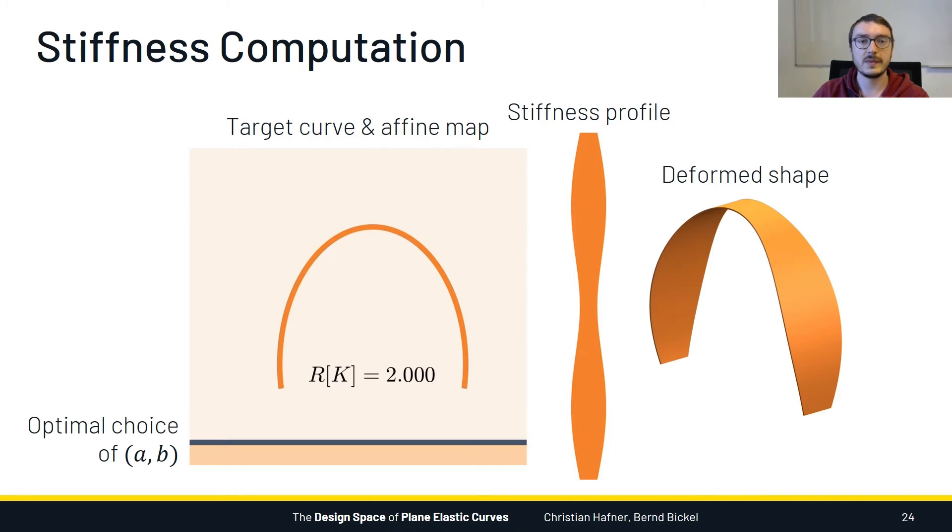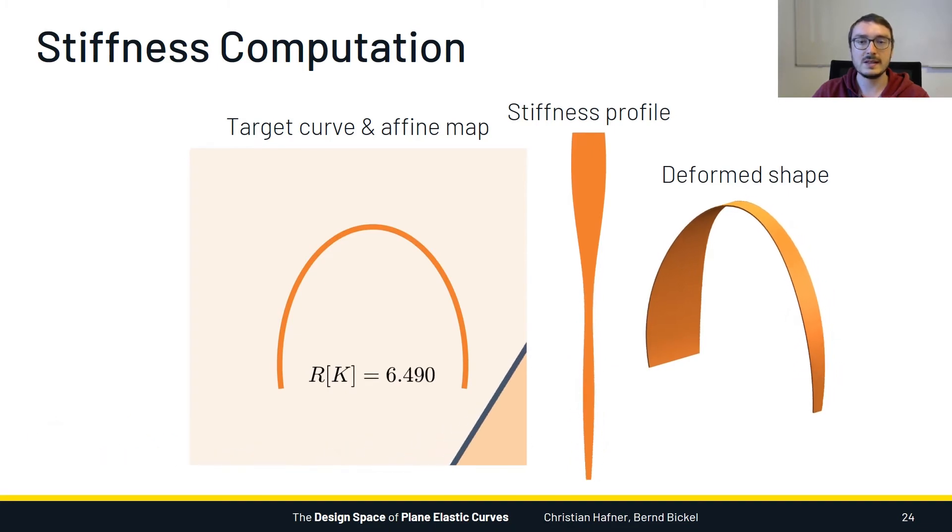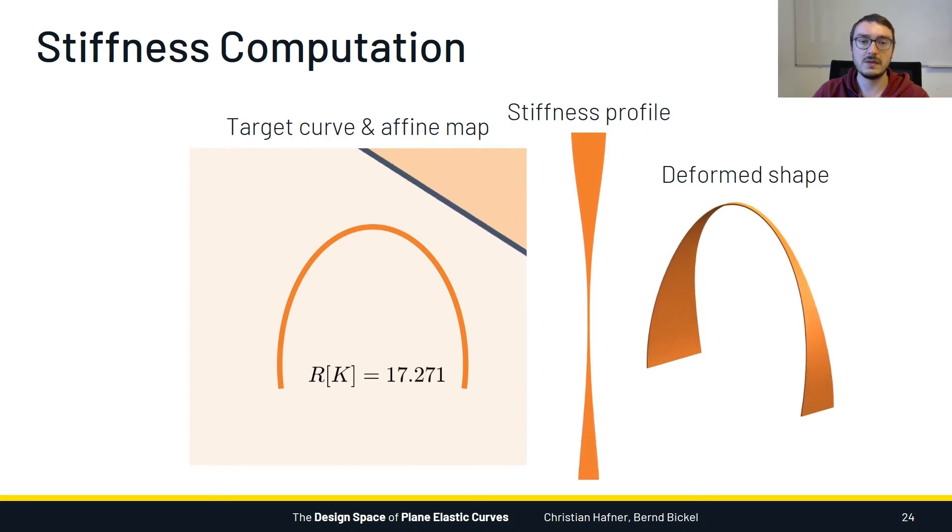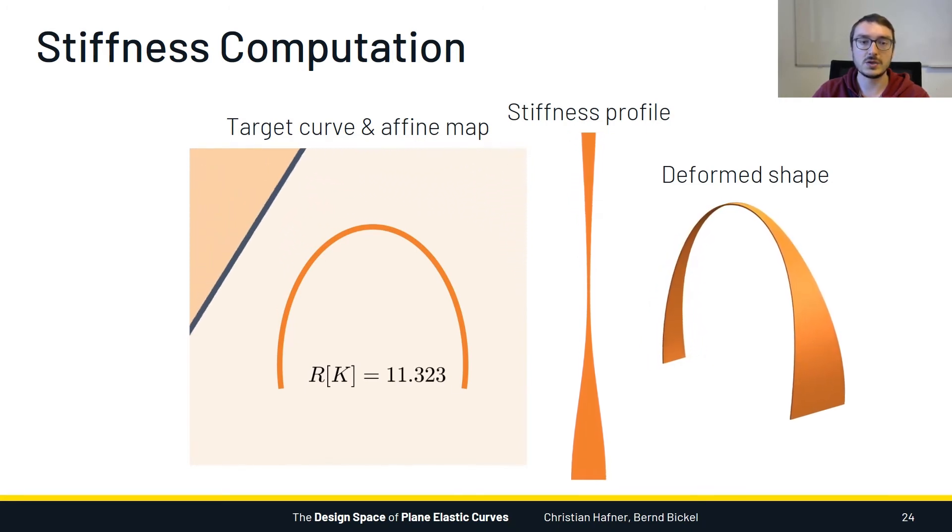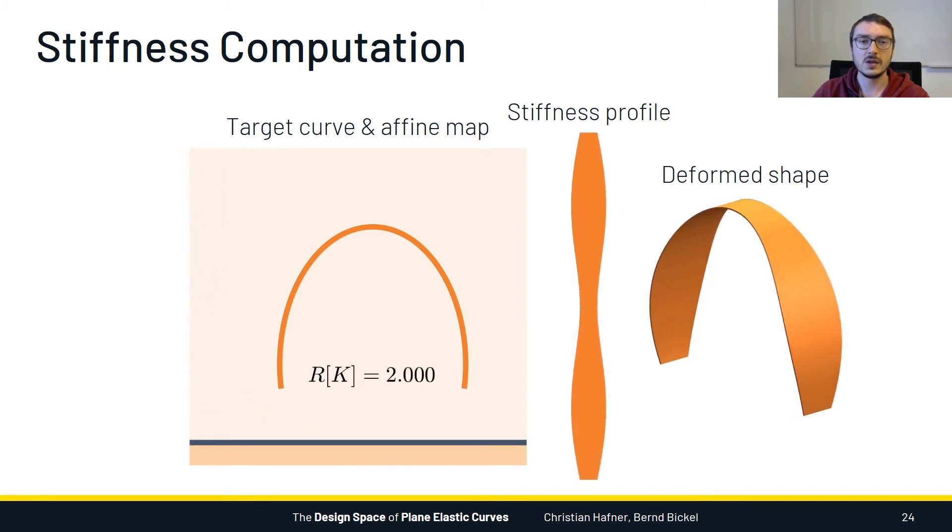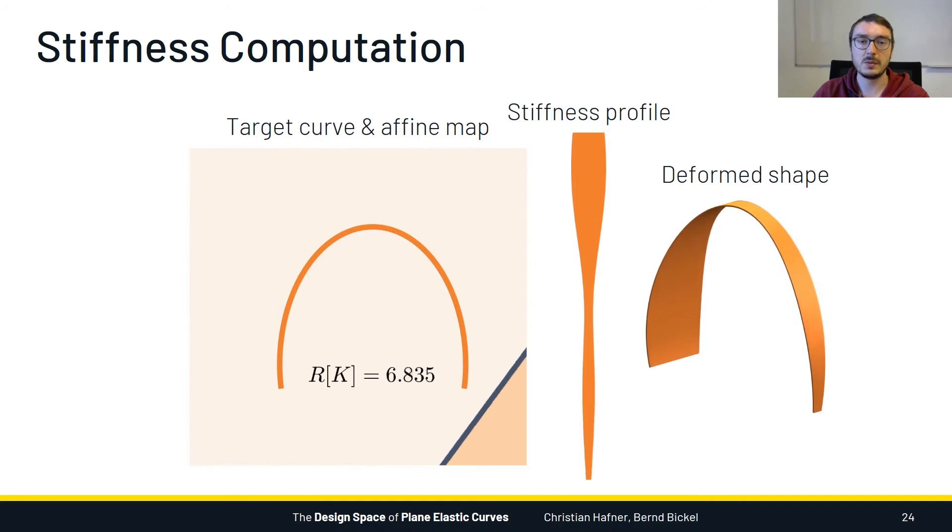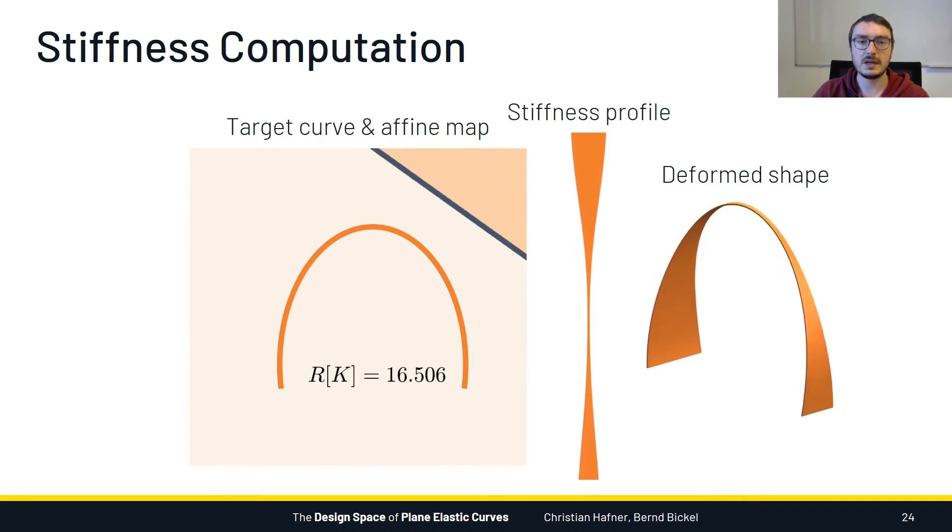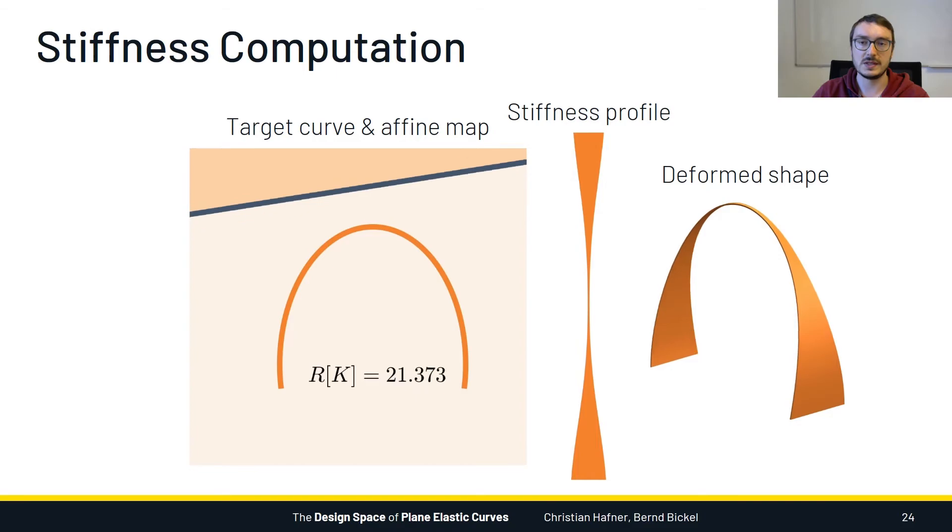Next let's look at what would happen if we didn't choose A and B optimally, but in some other way. Here we have an elliptical arc as the target curve, and the optimal values for A and B, which define the line shown here, yield a stiffness ratio of 2.0. Now if we were to choose A and B differently, by moving this line around, we can see that this leads to an increase of the stiffness ratio of up to a factor of 10, and it induces this narrow section in the stiffness profile, which makes it unusable in practice. So we can see that choosing A and B optimally with our linear program really makes a big difference in quality.